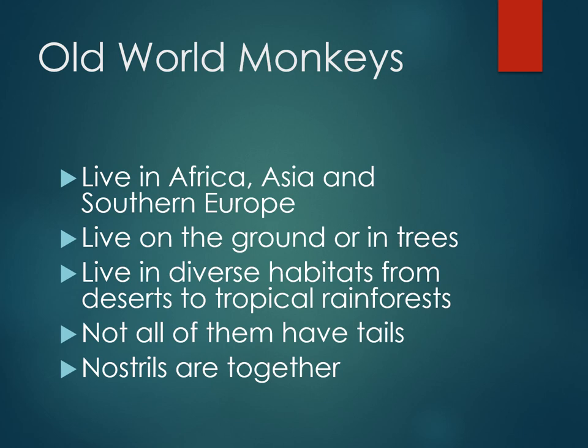Old World Monkeys live in Africa, Asia, and Southern Europe. They live on the ground or in trees, in diverse habitats such as deserts, grasslands, and tropical rainforests. Not all Old World Monkeys have tails — most do, but none have prehensile tails like New World Monkeys, and some have no tails at all. The nostrils of Old World Monkeys are together and point down.